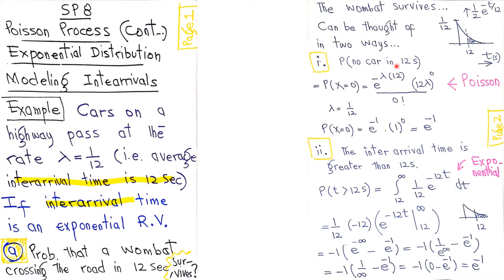First, we model this using a Poisson distribution and set k equal to 0. Here lambda is 1/12, which comes from the given rate. We find the probability of no cars passing in the time from 0 to 12 seconds.